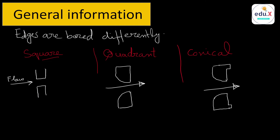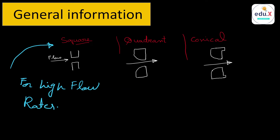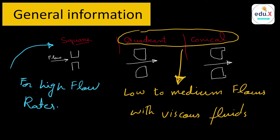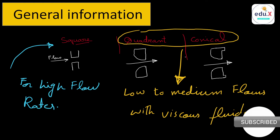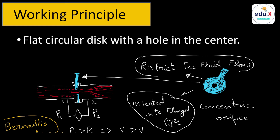There are also different edge types for orifice plates depending on the application. The three main types are: square, quadrant, and conical. The square type is used for high flow rate measurements, while the quadrant and conical types are used for low to medium flow rates with viscous fluids. The square type produces more pressure drop and has less energy recovery compared to the other two.